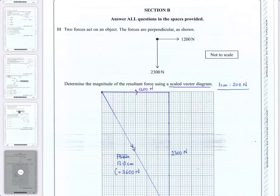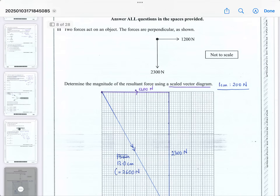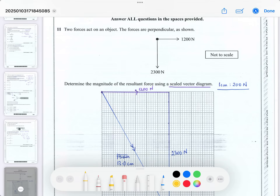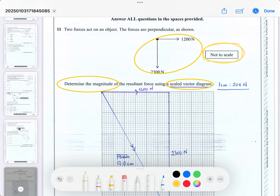Section B is what we're going to go through first — probably three questions in this video. Question 11: two forces act on an object; the forces are perpendicular. One is 1200 N to the right, another force is 2300 N downwards. They want you to determine the magnitude of the resultant force using a scaled vector diagram, because the force diagram given is not to scale deliberately, so you have to draw it to scale.